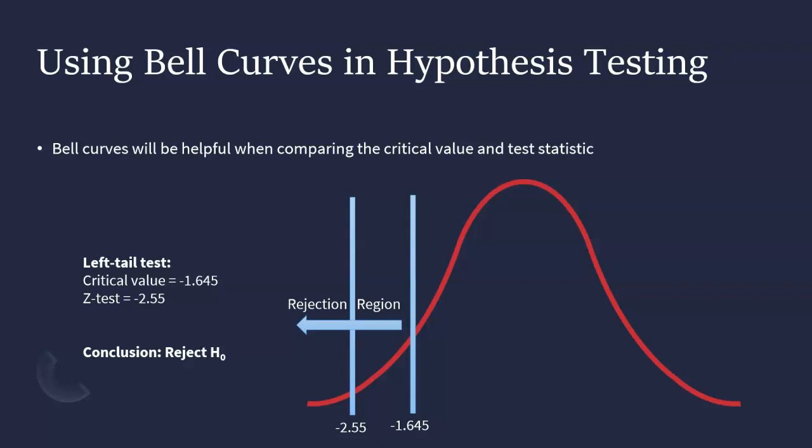If our test statistic did not fall within the rejection region, then we would not reject the null.